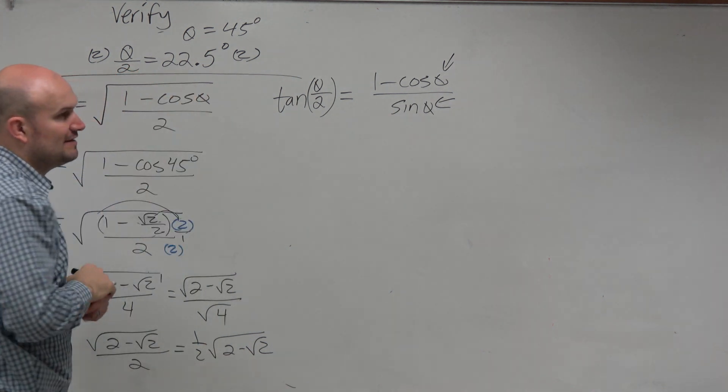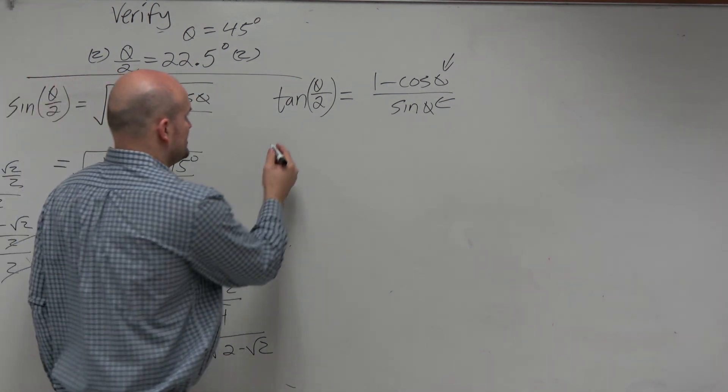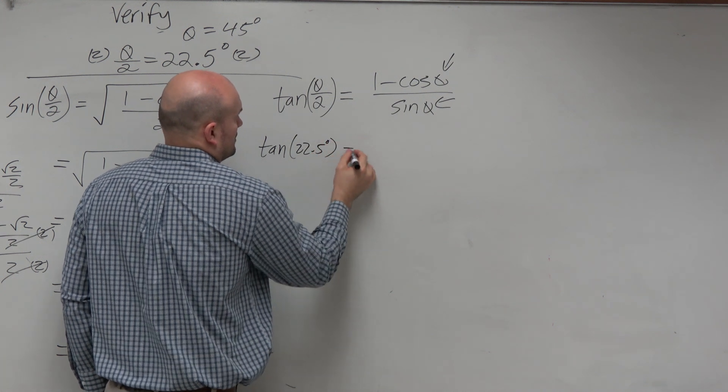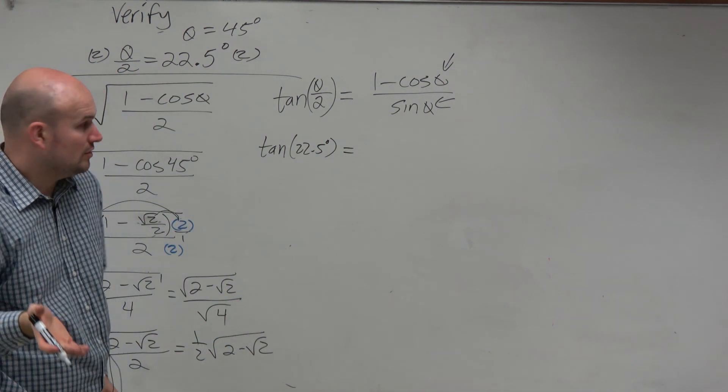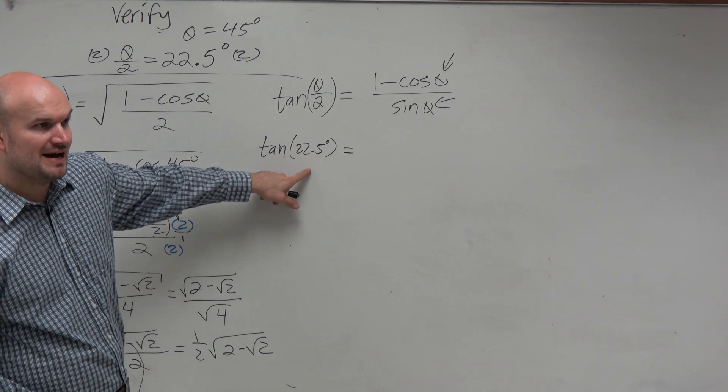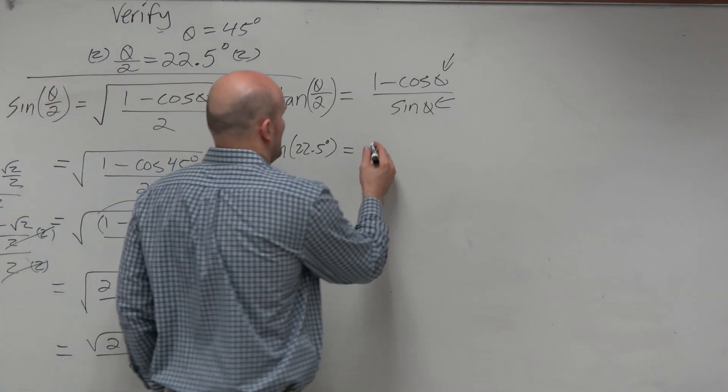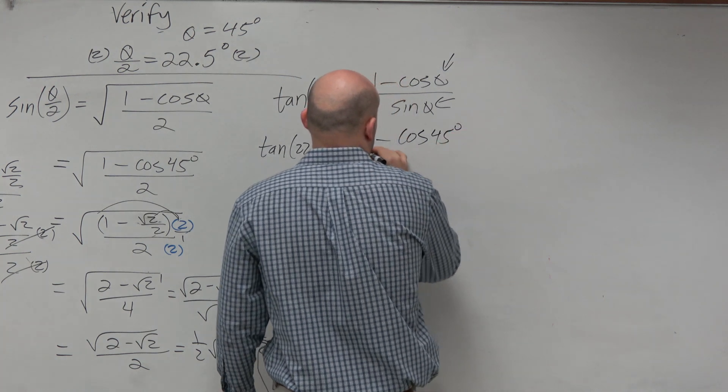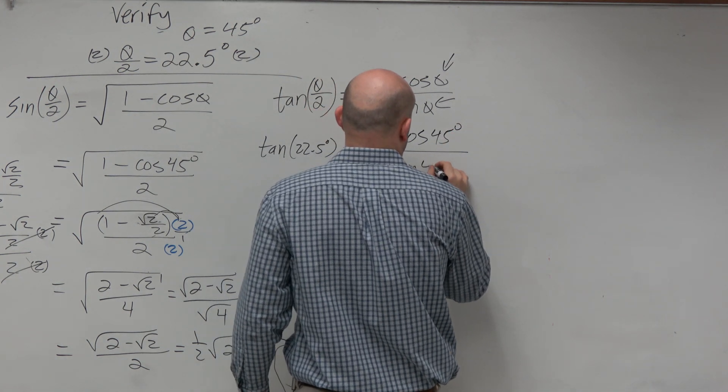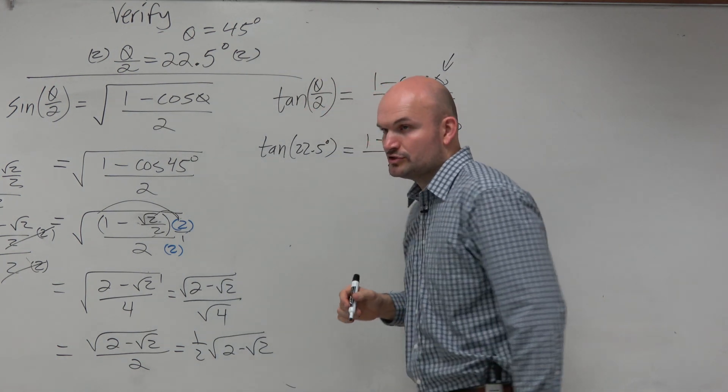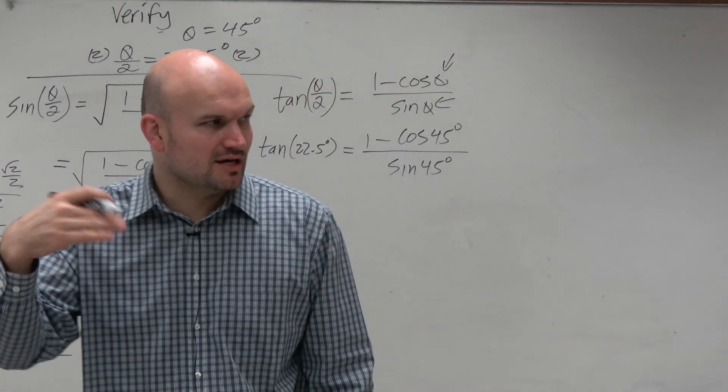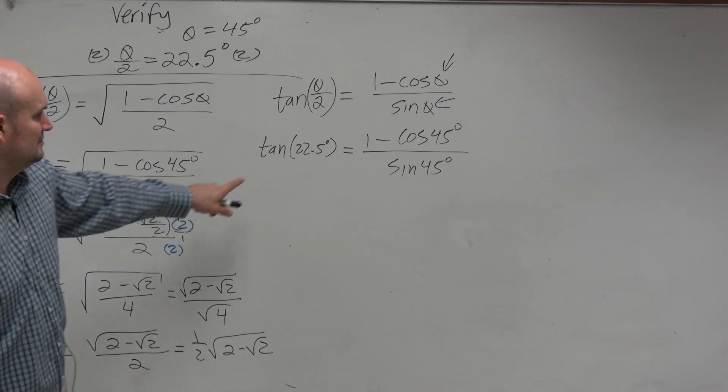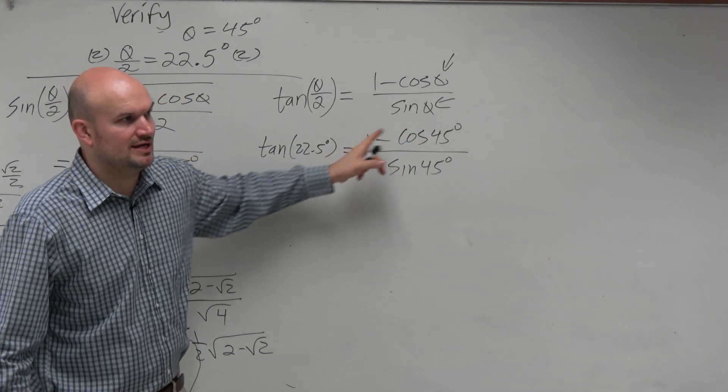Theta over 2 is 22.5 degrees. This could technically be written like this, and we're trying to find theta. If theta over 2 is 22.5 degrees, that means theta is 45 degrees. The easiest way for you to show me you don't know what you're doing is to plug in 22.5 degrees for theta into the formula.